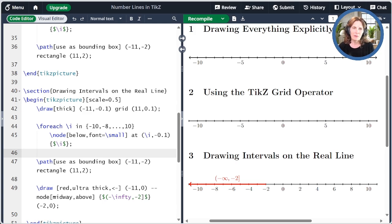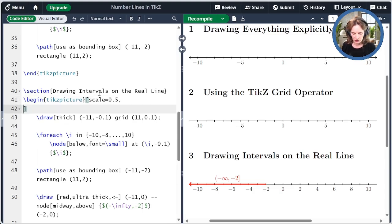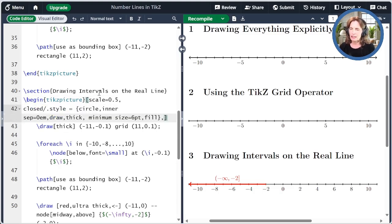Now, we should add something at minus 2 to indicate that the interval is closed. Before we do that, let's define a node style named closed that is a filled circle. I'll link to the episode on styles in the show notes. So here we're creating closed, and we're saying it's a style with a slash dot style.